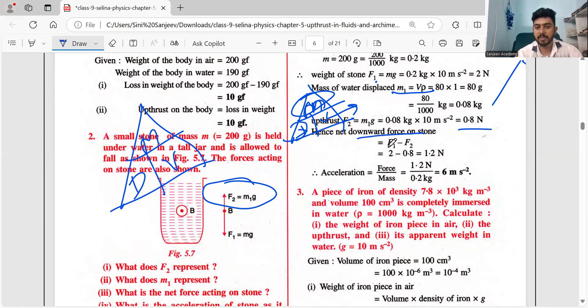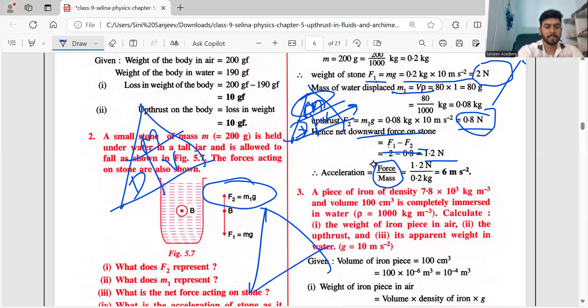Hence net downward force, that is F1 minus F2. F1 is mass into acceleration due to gravity, so 2 Newton. F2 is 0.8 Newton. So 2 minus 0.8 gives 1.2 Newton. Then what is my acceleration? Force by mass. F = ma, do the triangle trick. Always remember F is on top. So acceleration is F by m. Once you substitute, the mass of the stone is 0.1 kg, you get 12 m/s². I hope you are clear with this.